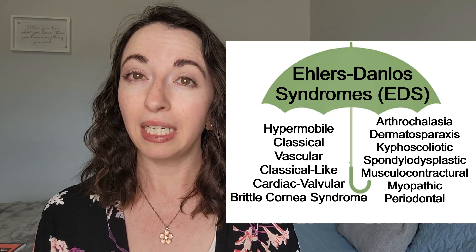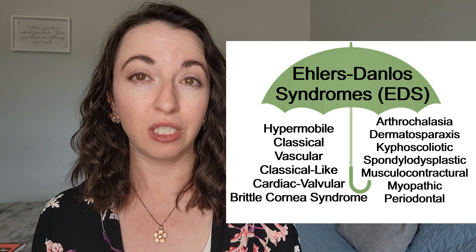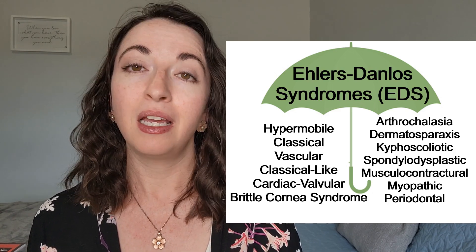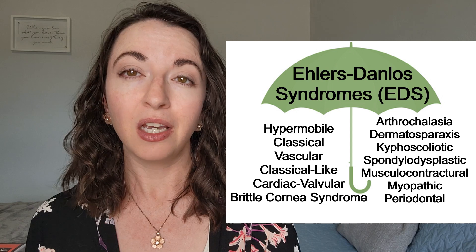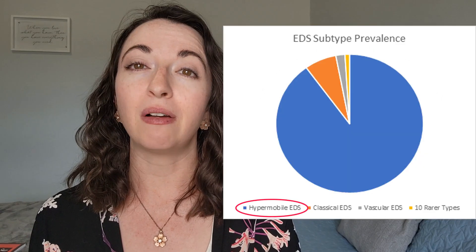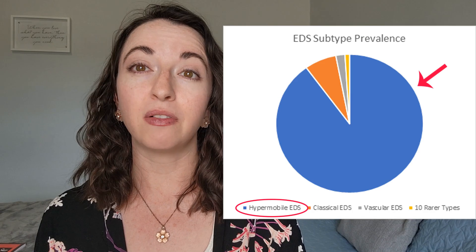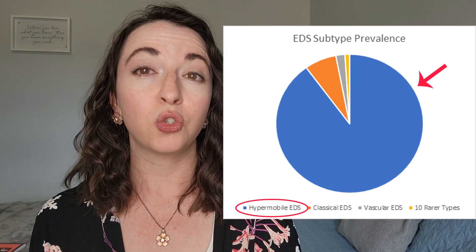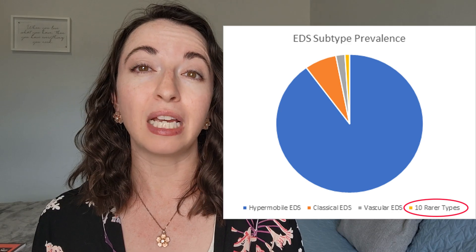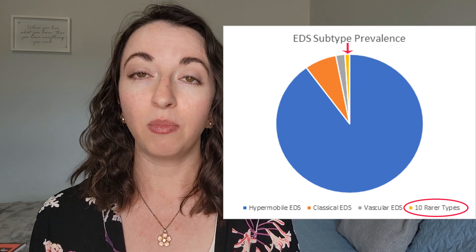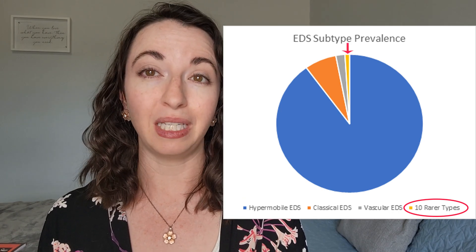Kyphoscolytic EDS belongs to a group of 13 related but separate genetic connective tissue disorders known as the Ehlers-Danlos Syndrome. The hypermobile subtype of EDS, which is the type that I have, is by far the most common, accounting for about 90% of all EDS cases. The kyphoscolytic subtype is extremely rare and accounts for less than 1% of all EDS cases, with a prevalence of less than 1 in a million people.